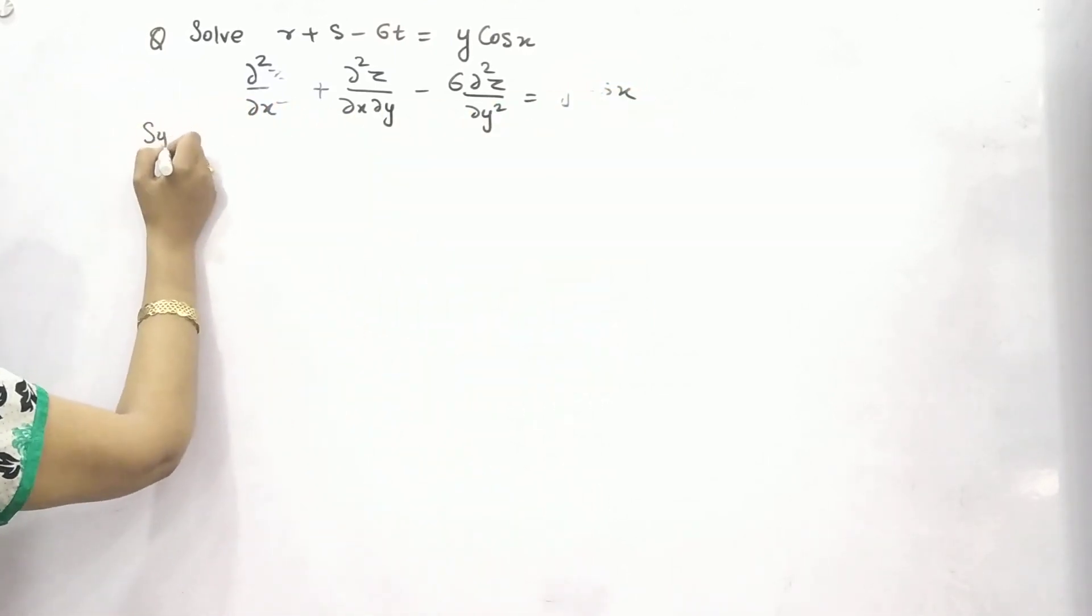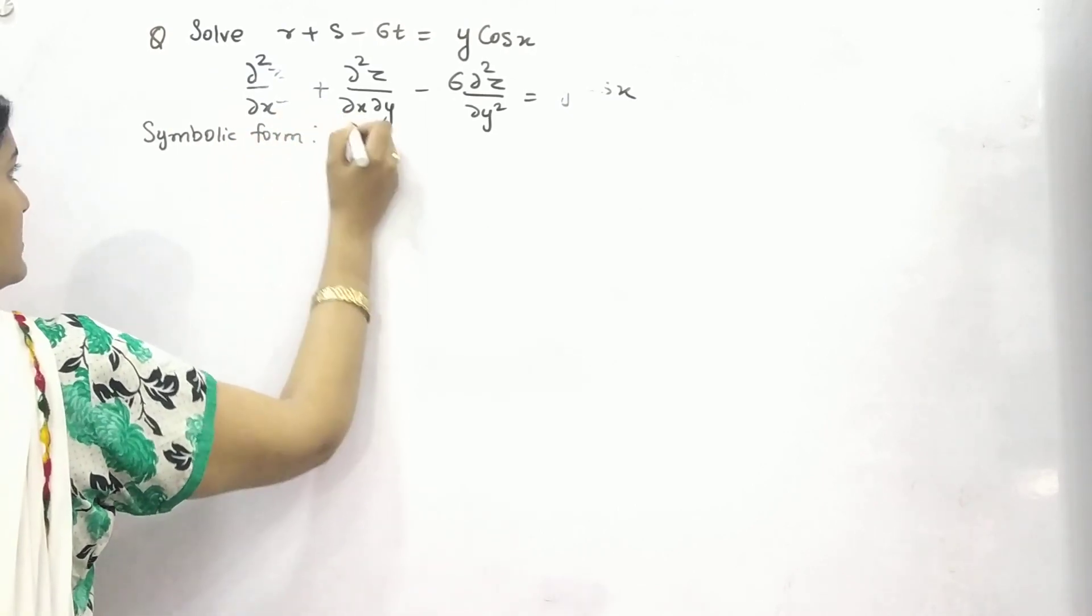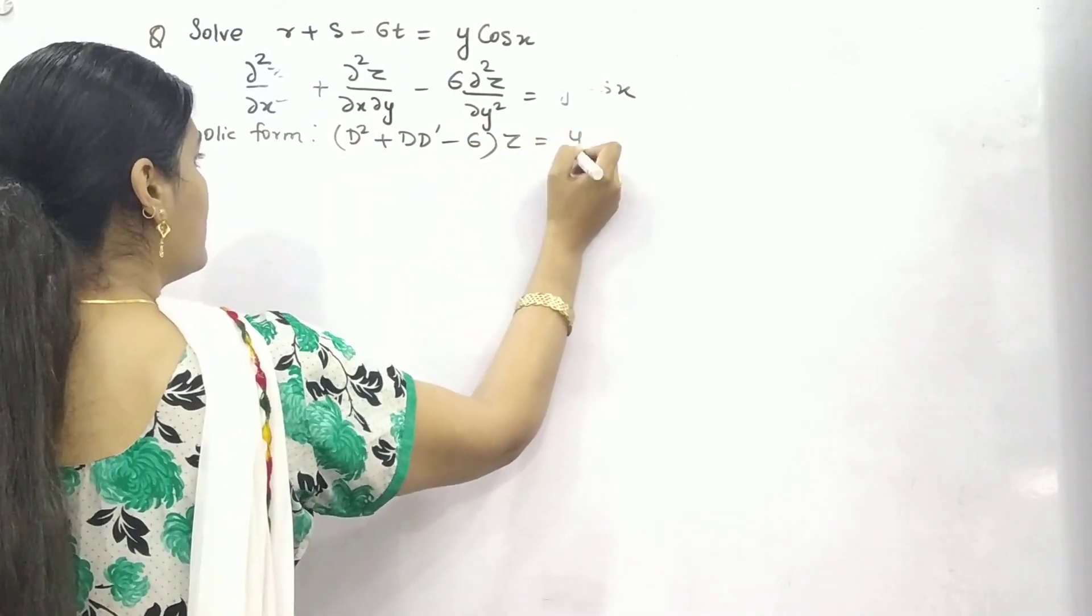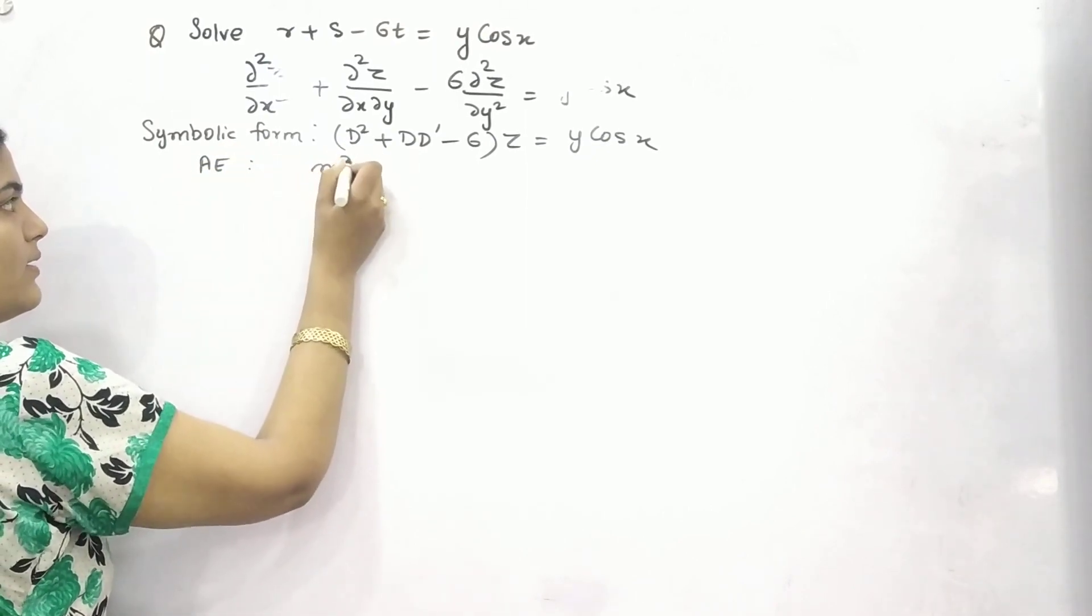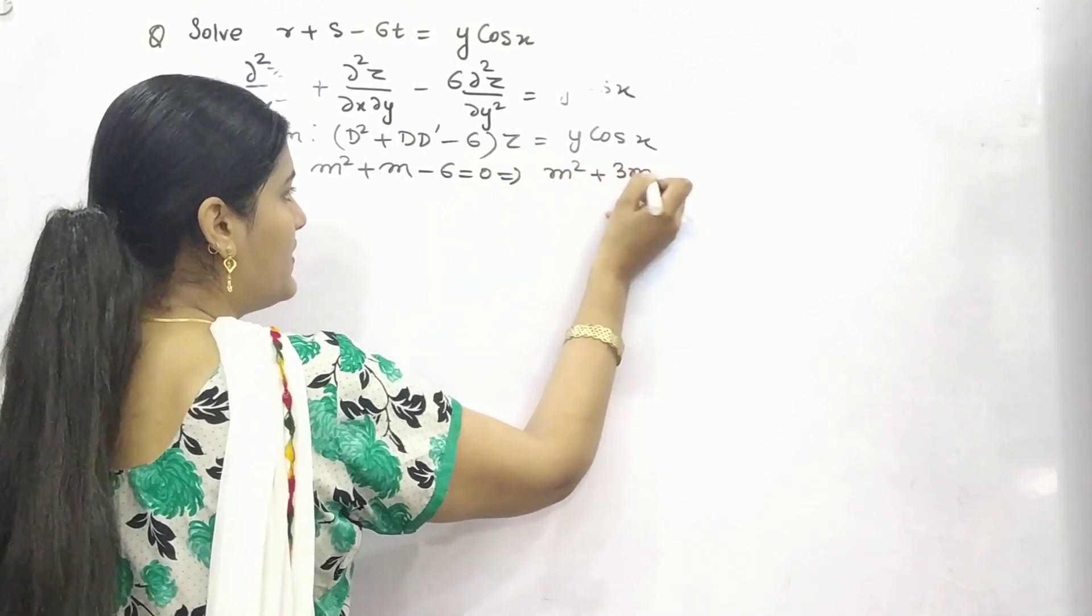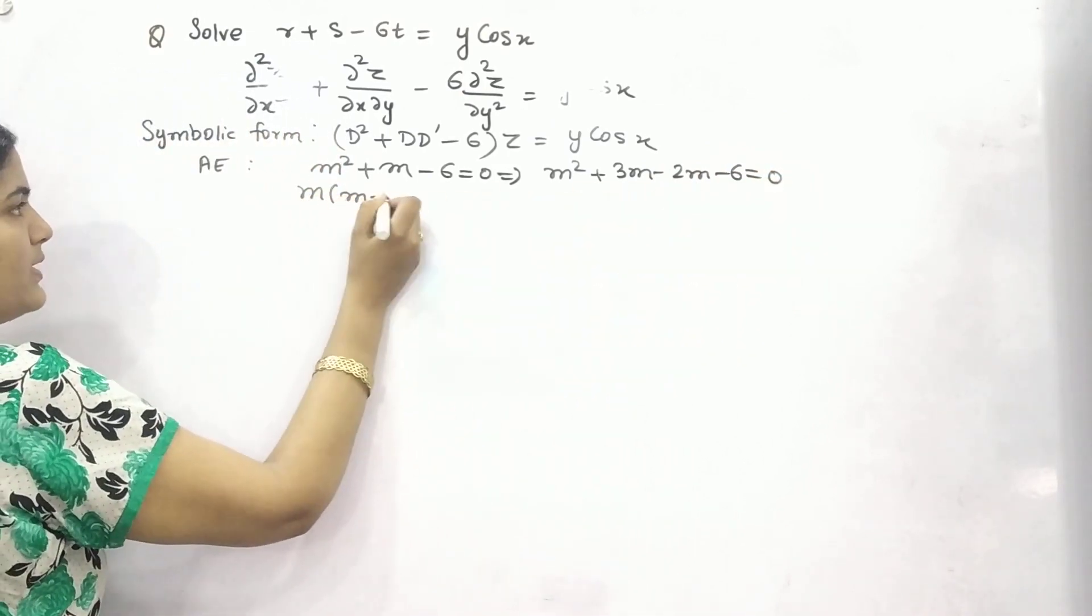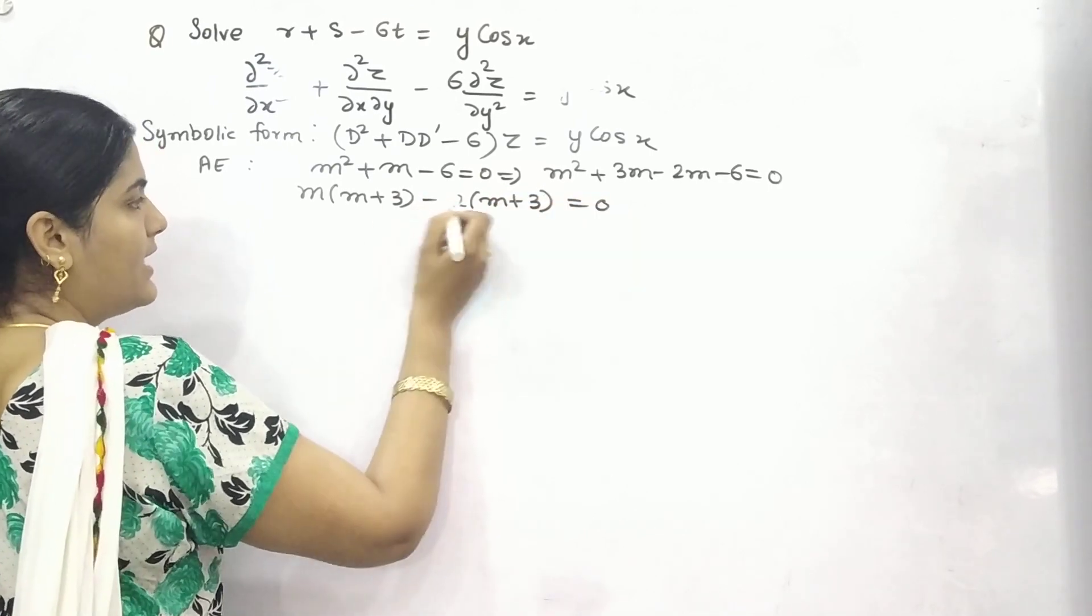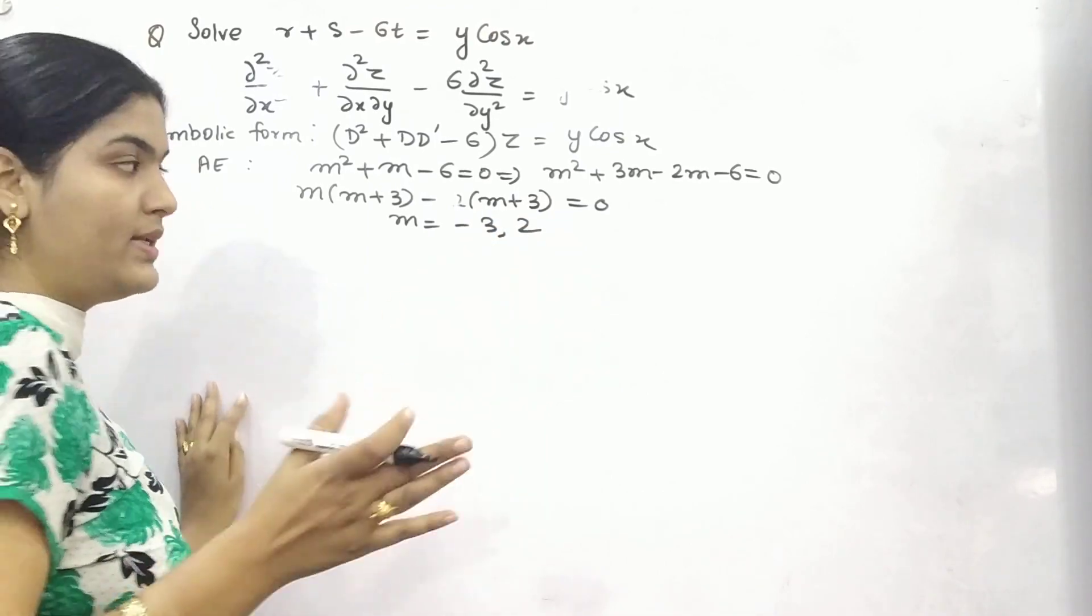So your symbolic form is d² + d - 6z = y cos x. Now your auxiliary equation will be m² + m - 6 = 0. So this will be m(m+3) - 2(m+3). What you will get is m as -3 and 2. So you can see roots are real but distinct.